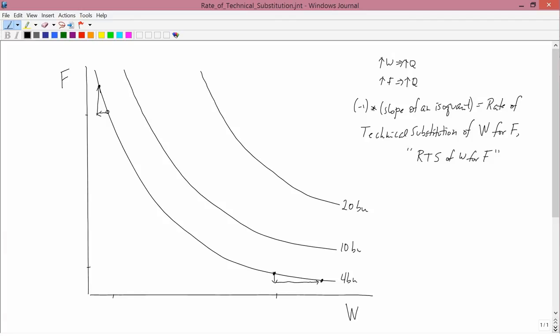With this definition, let's see how the rate of technical substitution behaves in an isoquant that has the typical slope. So in the upper left, there's a typical shape. Let's see what the slope of the isoquant is.